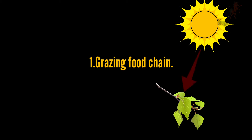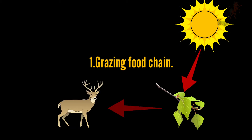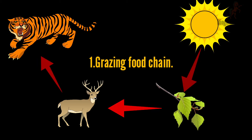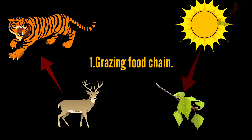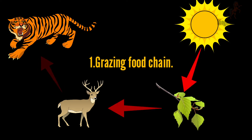In a grazing food chain, the first transfer of energy always occurs between green plants and herbivores. Usually these are long-sized chains because most of the solar energy gets captured by the green plants.